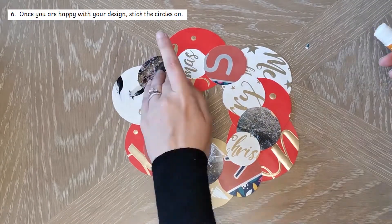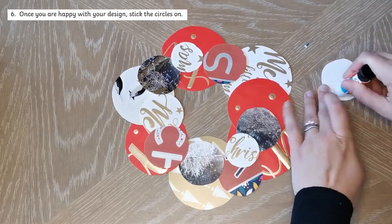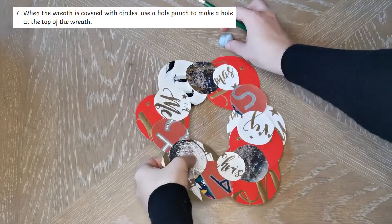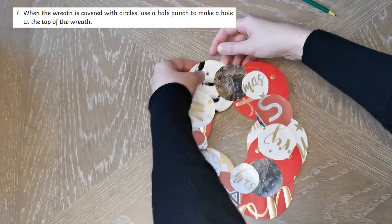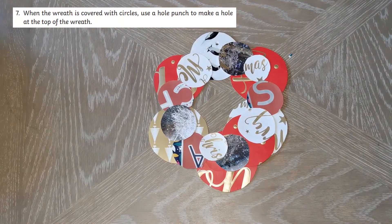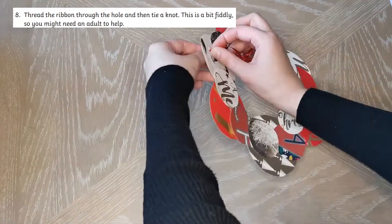Once you are happy with your design, stick the circles on. When the wreath is covered with circles, make a hole at the top. Thread the ribbon through the hole and then tie a knot.